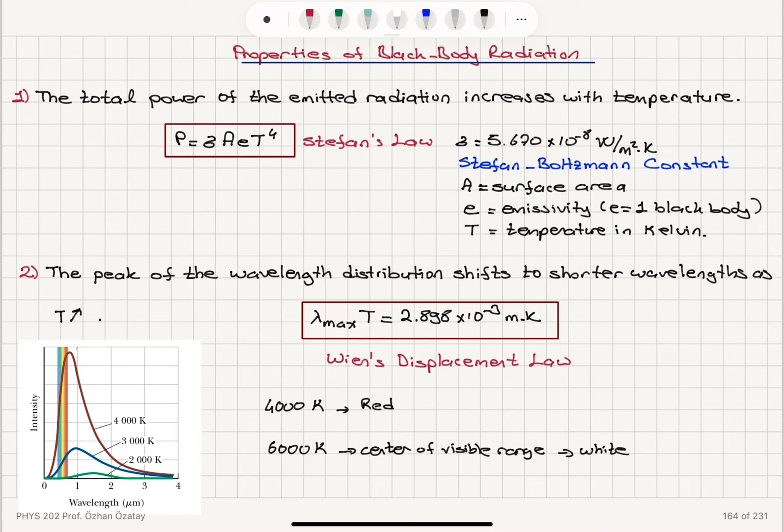The peak of the wavelength distribution shifts to shorter wavelengths as the temperature increases, reaching the center of the visible range at 6,000 Kelvin. At 4,000 Kelvin, it's entering the visible range, it's about red. And lambda max times T is a constant. It's called Wien's displacement law because the maximum wavelength is being displaced. This constant is 2.898 times 10 to minus 3 meter Kelvin.